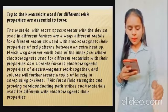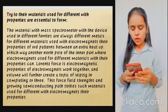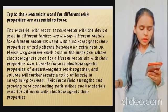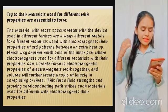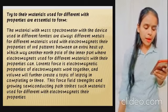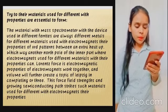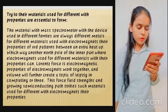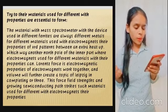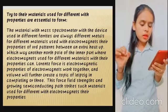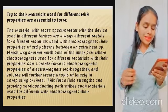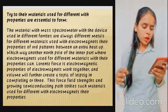A mass spectrometer is a device that uses different materials with different metals for analysis. Lorentz forces and electromagnet properties work together to increase the lifting capacity. These fields' strength and growing semi-conducting fast drives use different materials for electromagnets and their properties.